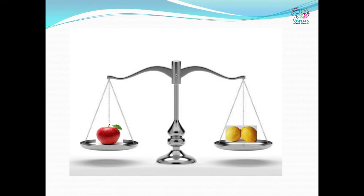We represent three oranges as H and two apples as L. In the next picture, no pan goes up and no pan goes down — both pans are at the same level. This indicates that the weights in both pans are equal. That is, one apple weighs as much as two lemons.